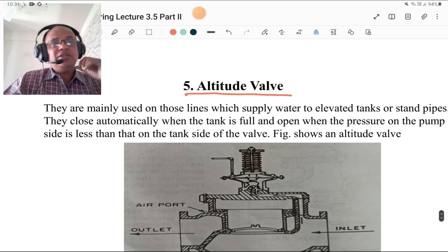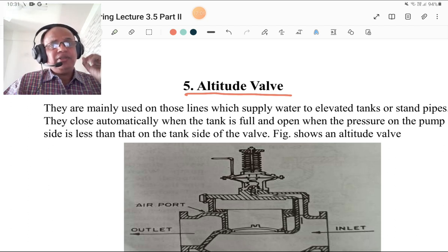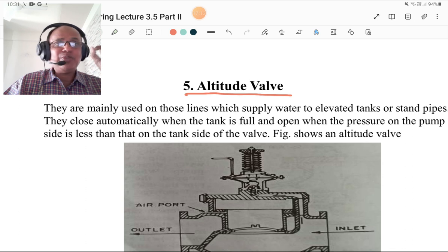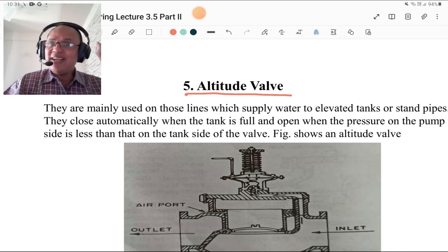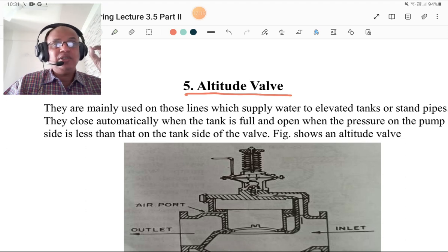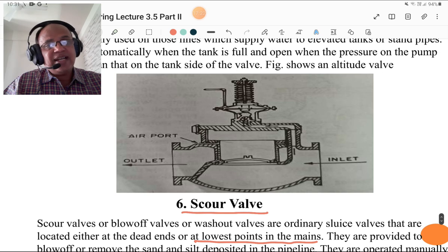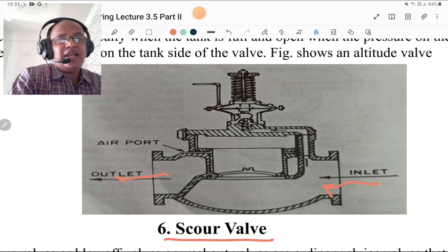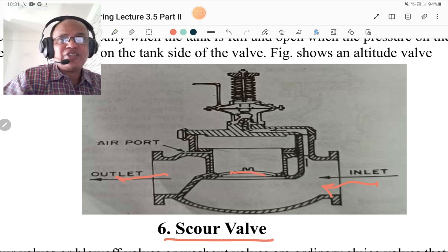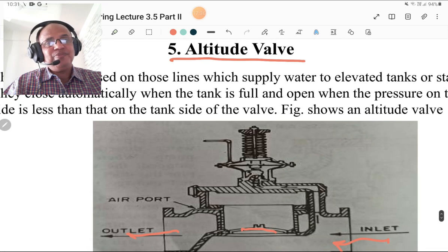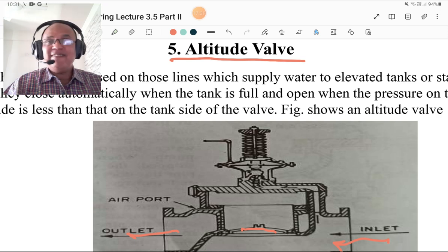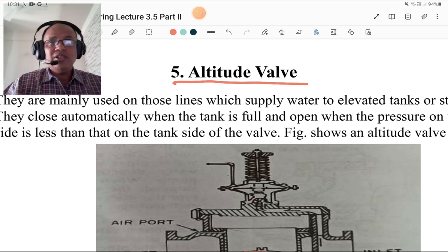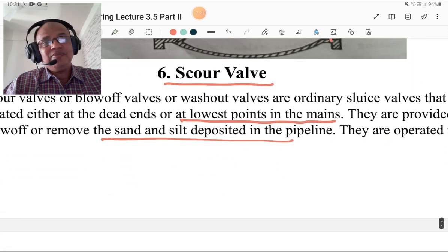Then altitude valve. They are mainly used on those lines which supply water to the elevated tanks or standpipes. They close automatically when tank is full and open when the pressure on the pump side is less than that of tank side of the valve. Figure shows the altitude valve. This is the inlet and this is the outlet of that valve. Arrangement is made in the valve in such a way that it has automatically opening mechanism when the tank is not full. And when tank is full, it closes automatically.